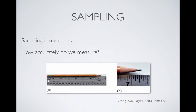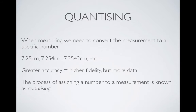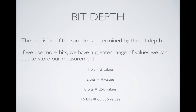So if instead of measuring a pencil, we're measuring the position of a microphone membrane or the voltage of a signal coming out of a microphone, the greater the accuracy we have when we measure, the more accurate the sound we're going to reproduce. But of course that takes more data. The process of assigning a number to a measurement is known as quantizing, and the accuracy affects the quality of the recording of whatever you're sampling.